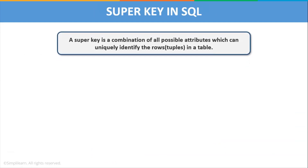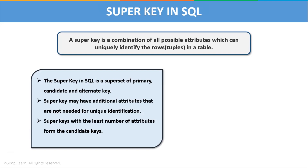Next, let us discuss about the super key in SQL. A super key is a combination of all possible attributes which can uniquely identify a row or tuple in a table. A super key may have some extra attributes which are not necessary for uniquely identifying the rows. A super key in SQL is a superset of primary key, candidate key, and alternate key — basically a combination of all these keys. Super key will have additional attributes that are not needed for unique identification, and super keys with the least number of attributes form the candidate keys.